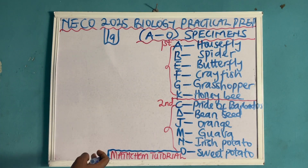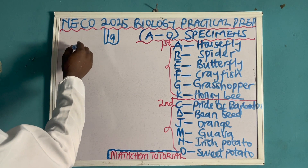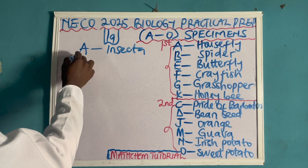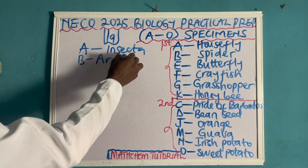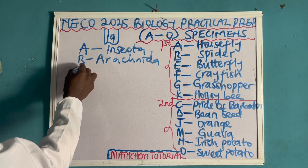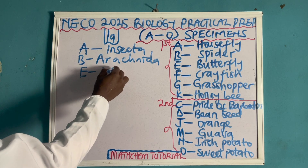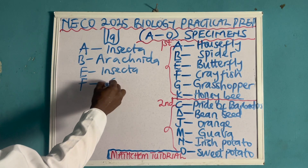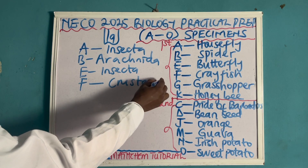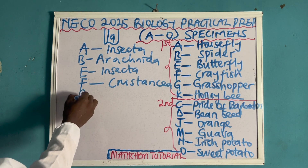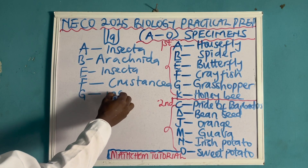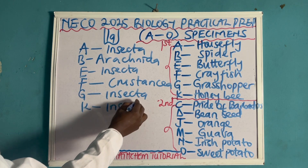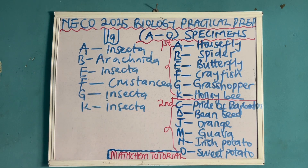Looking at this first category, the class of all the specimens is: specimen A is classified as Insecta; B is classified as Arachnida; E is Insecta as well; F is classified as Crustacea; G is classified as Insecta as well; and K is also classified as Insecta. So that is the first thing they will ask.